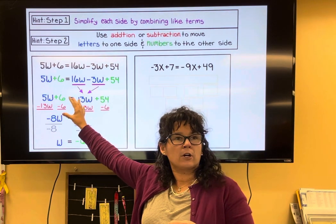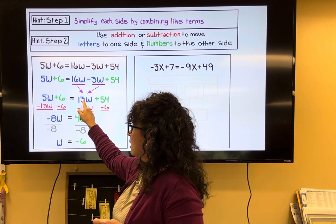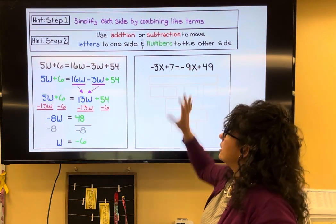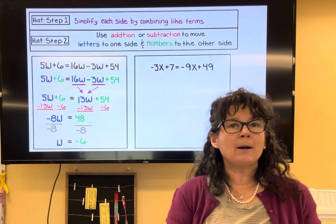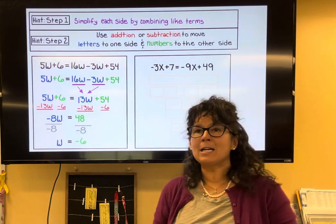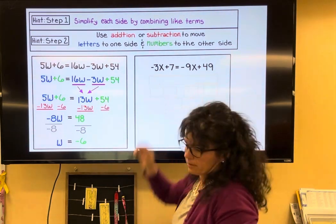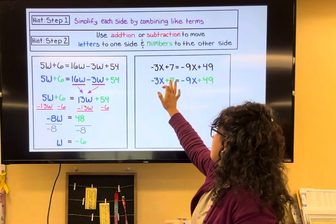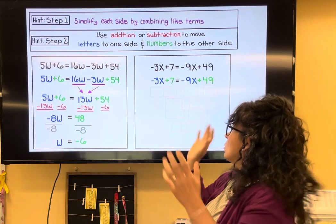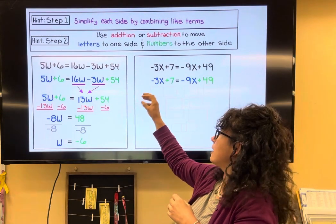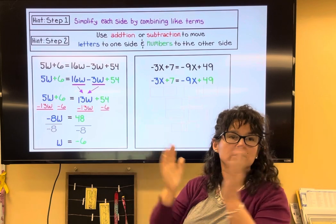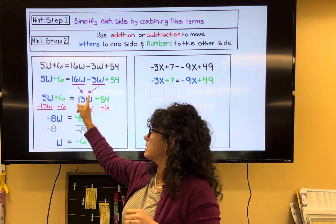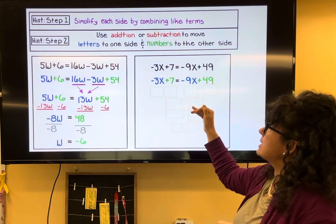We did the harder one first because we had to combine like terms before using addition and subtraction. For this second problem, I still check step one — can I simplify by combining anything alike? I'll color code it: negative 3x and negative 9x are my letters, and 7 and 49 are my numbers. On the left side there's no bunch of blues or greens to combine, and the same on the right side, so we're done with step one.